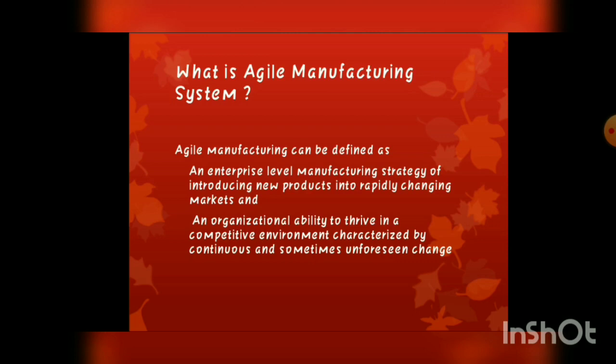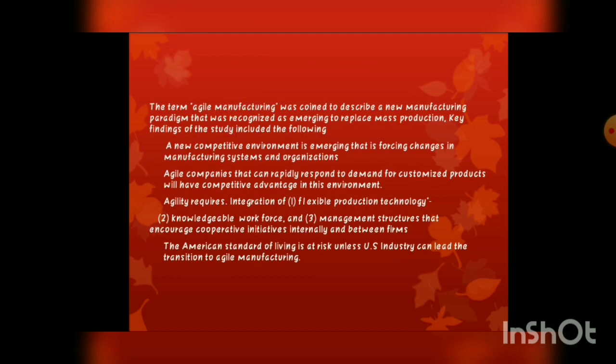Agile Manufacturing System को simple words में समझें तो यह एक manufacturing strategy है enterprise level की — एक नए product को market में launch करना, और वो भी rapidly changing market में, जिसका meaning है कि लोग नए type के products को ज़्यादा prefer कर रहे हैं पुराने type के products से। जब भी कोई company Agile Manufacturing System follow करती है, वो एक नए type का product market में launch करती है जिससे वो market के competition में ऊपर रहती है और साथ ही दूसरी companies पर pressure भी डालती है।